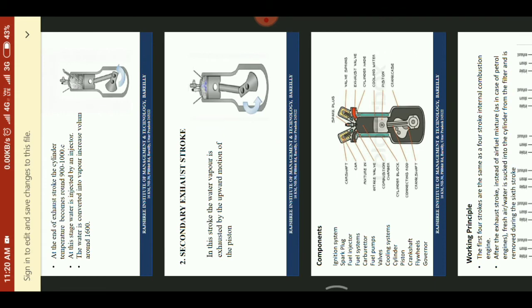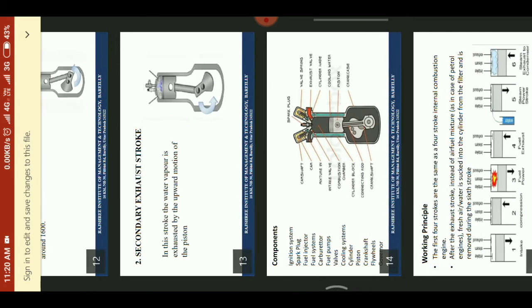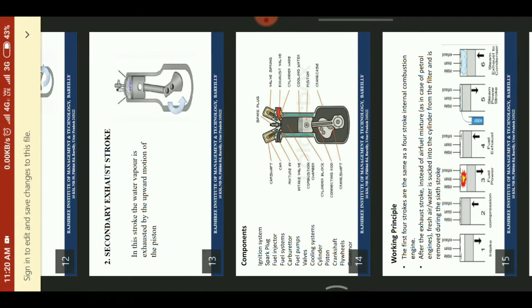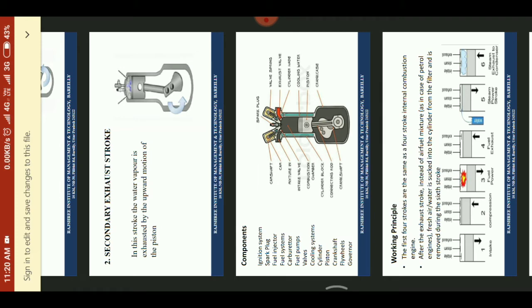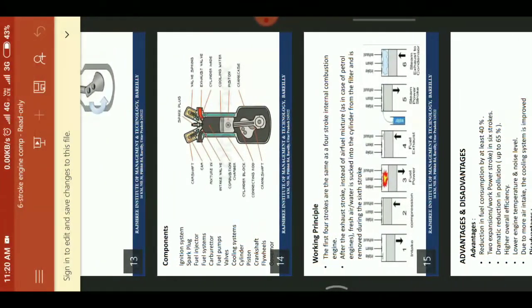In the secondary exhaust stroke, the water vapor is exhausted by the upward motion of the piston. When the piston moves from BDC to TDC, an outlet valve is opened and the exhaust material is expelled through the exhaust pipe.